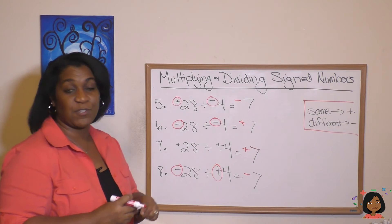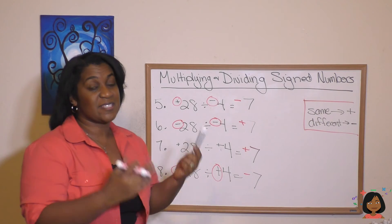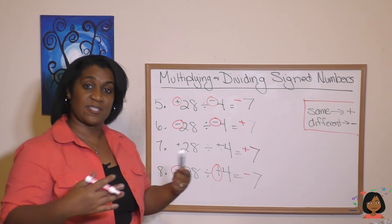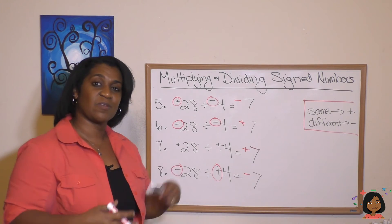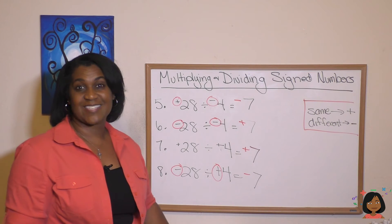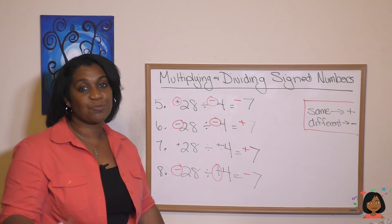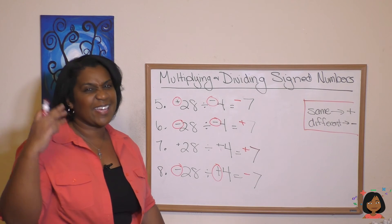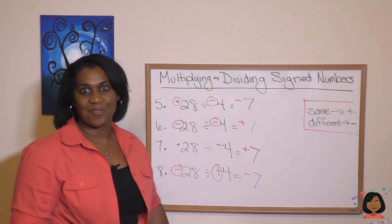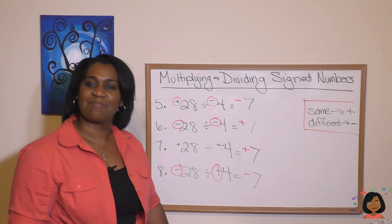That's it. You can remember: when multiplying or dividing, same signs equals positive, different signs equals negative. It's that simple. Make sure you try the practice problems so you can drill this and get it in your head. Okay, it's Nicole the Math Lady. I'll see you next time. Bye bye.